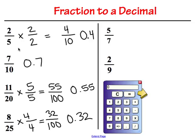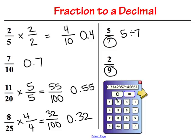Those were examples of fractions you could turn into equivalent fractions to get a decimal. Some fractions — like those on the right side — have a denominator such as 9 where there's no way to change it to get a 10 or 100 on the bottom. For these fractions, go ahead and use a calculator. All you do is turn it into a division problem: 5 over 7 means 5 divided by 7. That gives us 0.714285... and it goes on. We round to the hundredths place: 0.71.